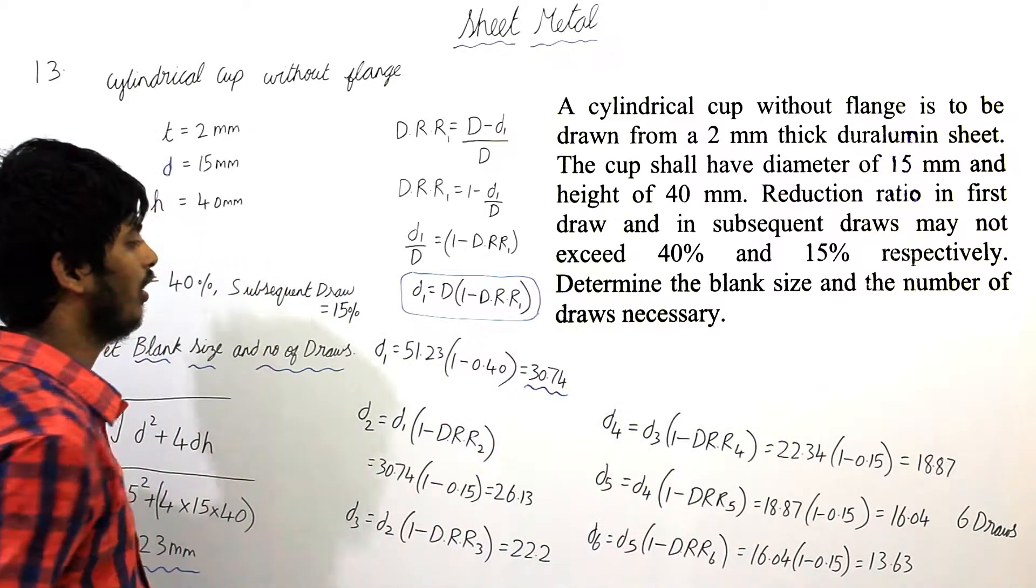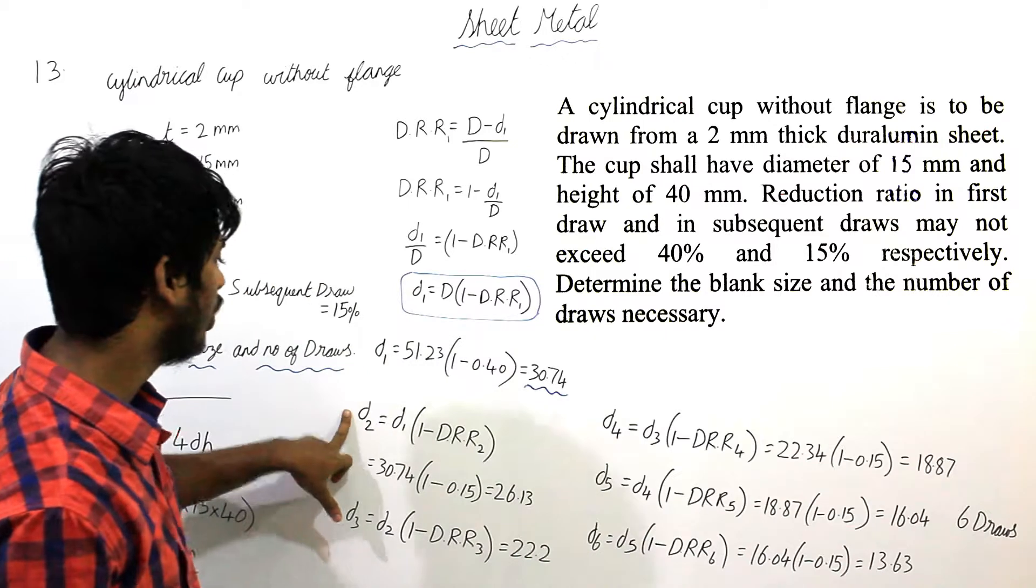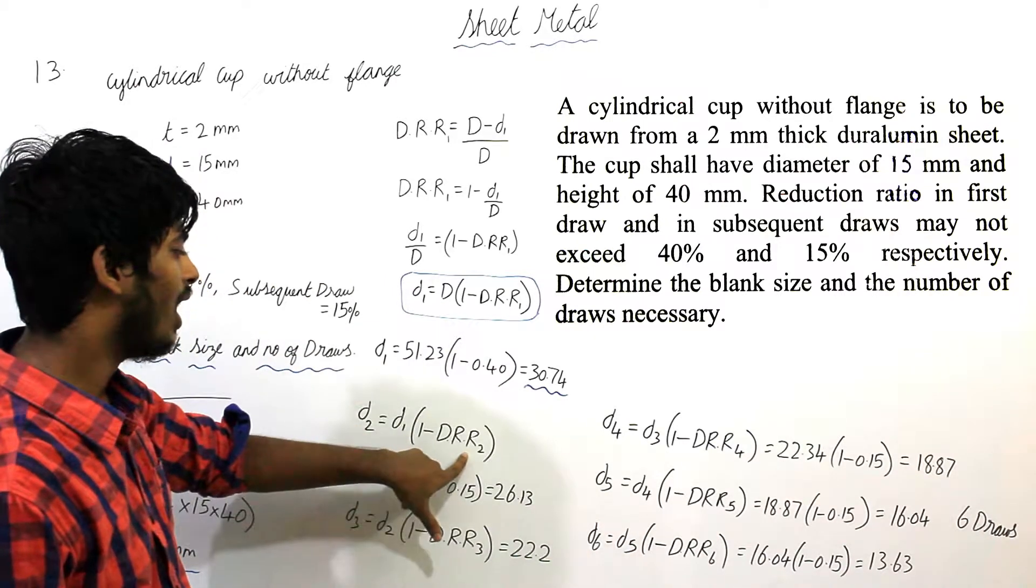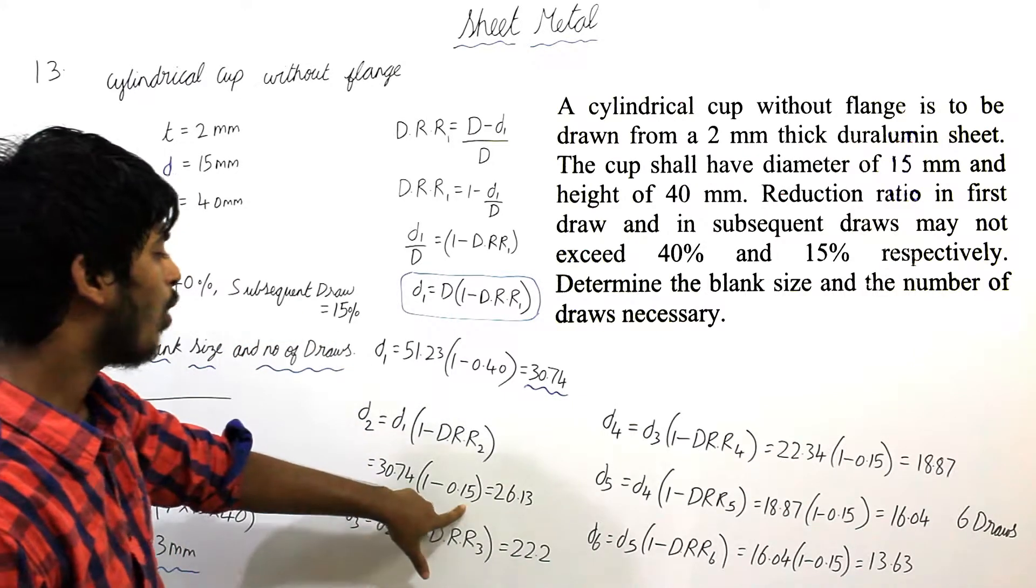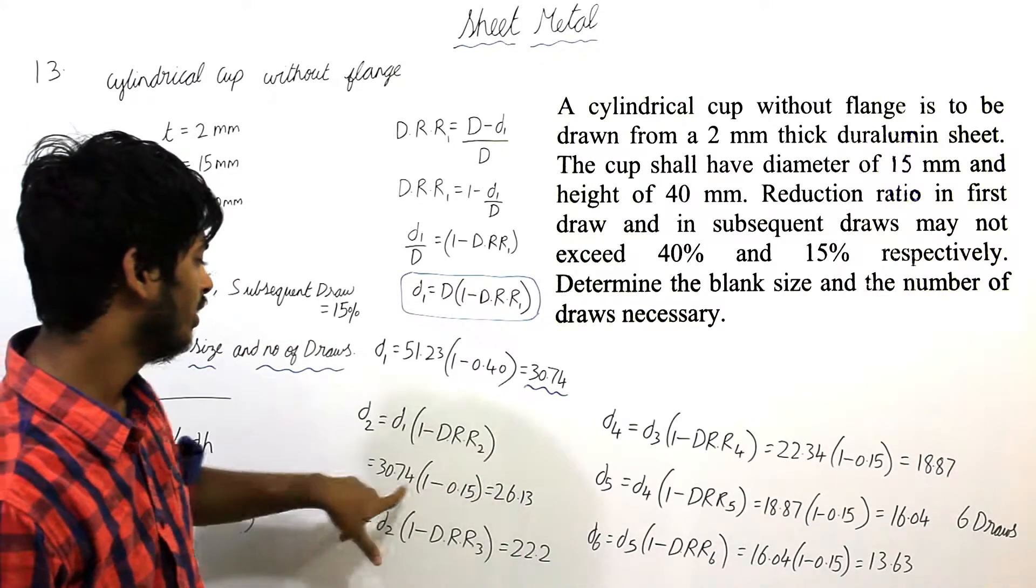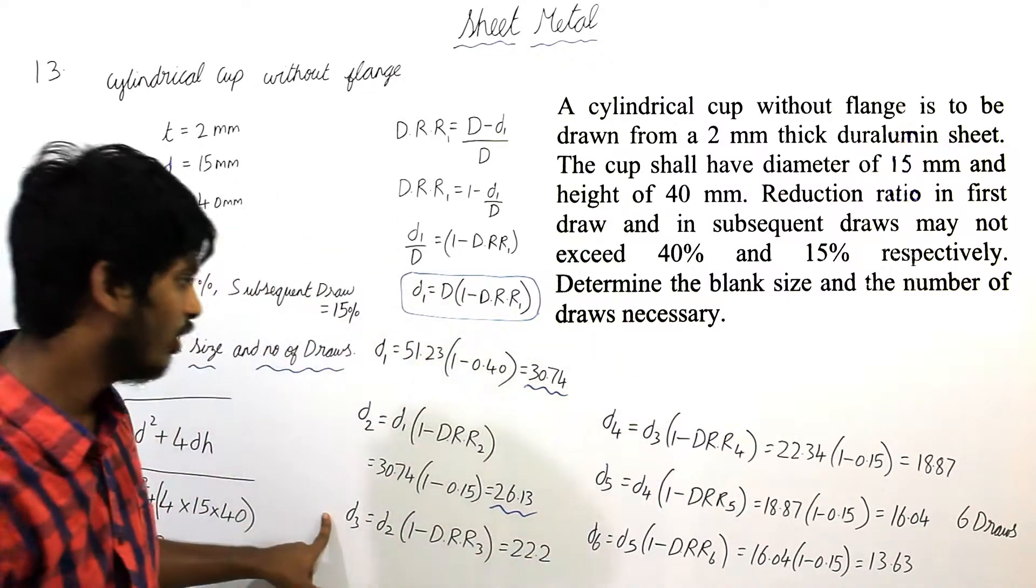That is 30.74 and d2 is equal to small d1 into 1 minus DRR2. Here the DRR2 value is 15%. So, 0.15. And d1 is 30.14. I am getting 26.13. Same way for d3.